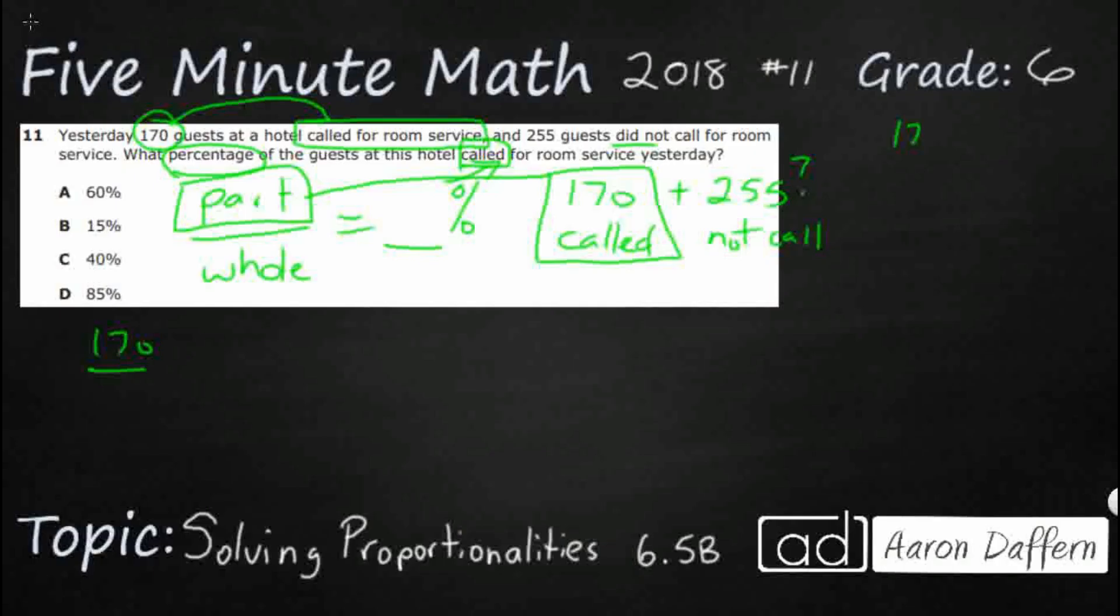We have to actually add 170 and 255. Because 170 called, 255 did not call. And let's see if we add those together, how many total guests we have. There we go. So we've got 425 total guests. So that's my total. So I'm going to use that as my denominator.